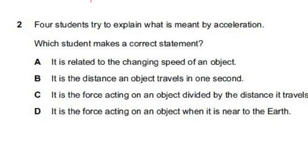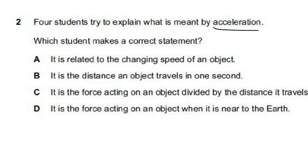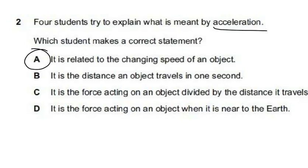The next question is conceptual: what is the definition of acceleration? Option D describes gravity, C is not a real physical quantity, and B — 'distance traveled in one second' — is actually the definition of speed. The correct answer is A: acceleration is the change in speed divided by the time taken to make that change.